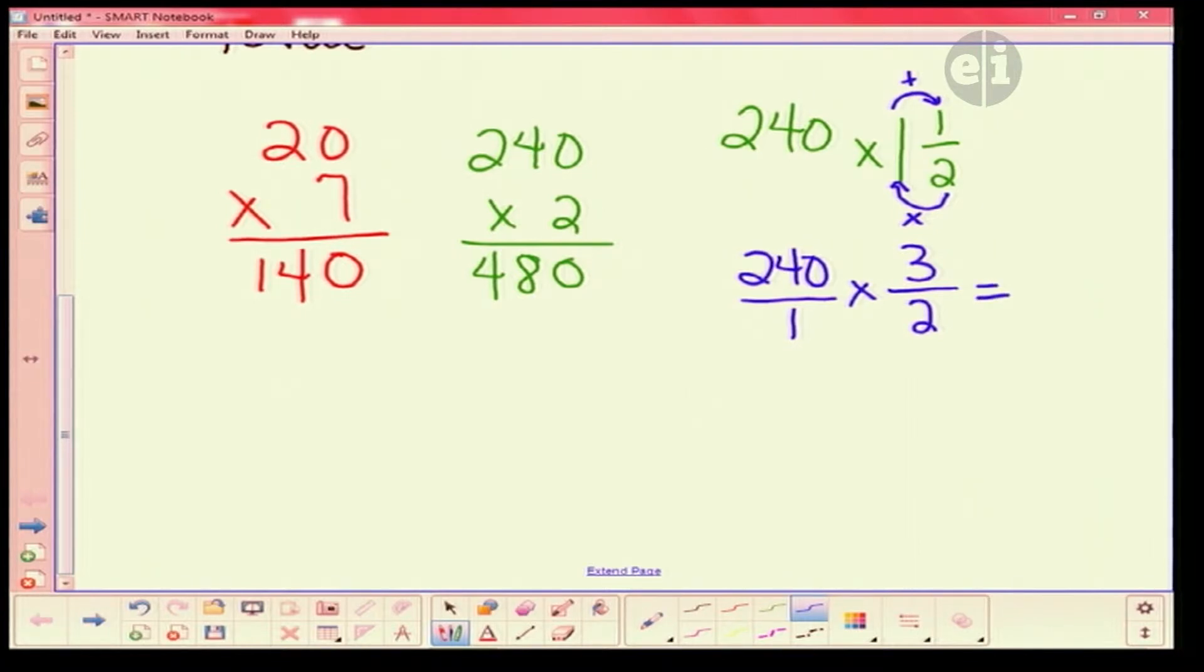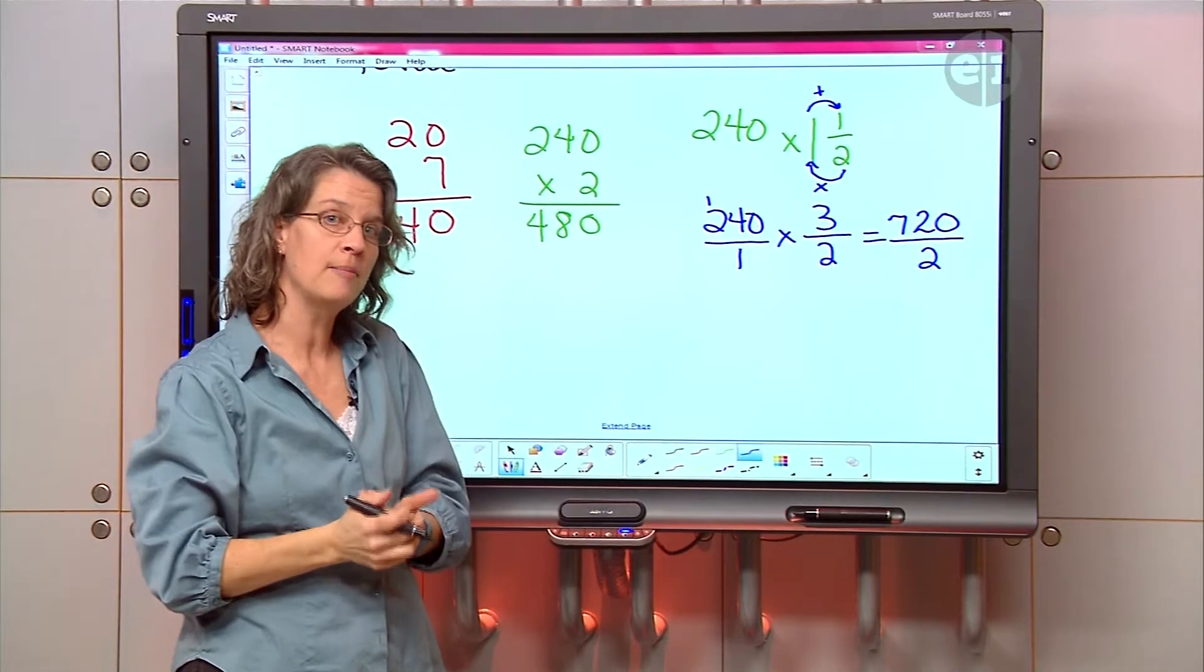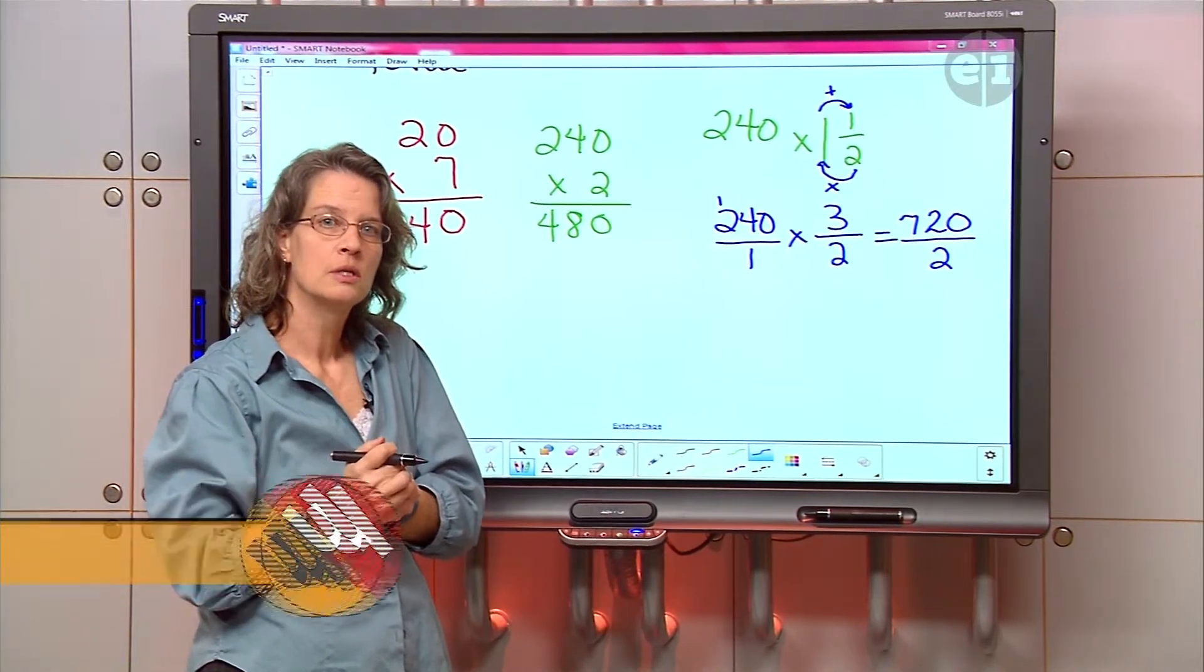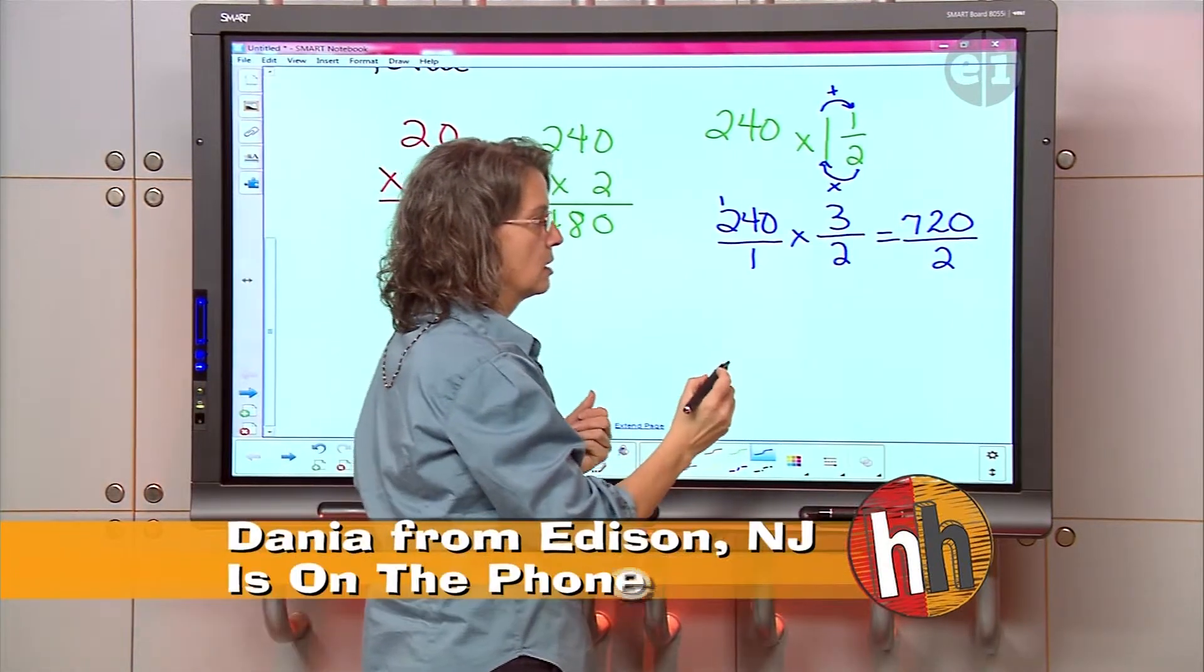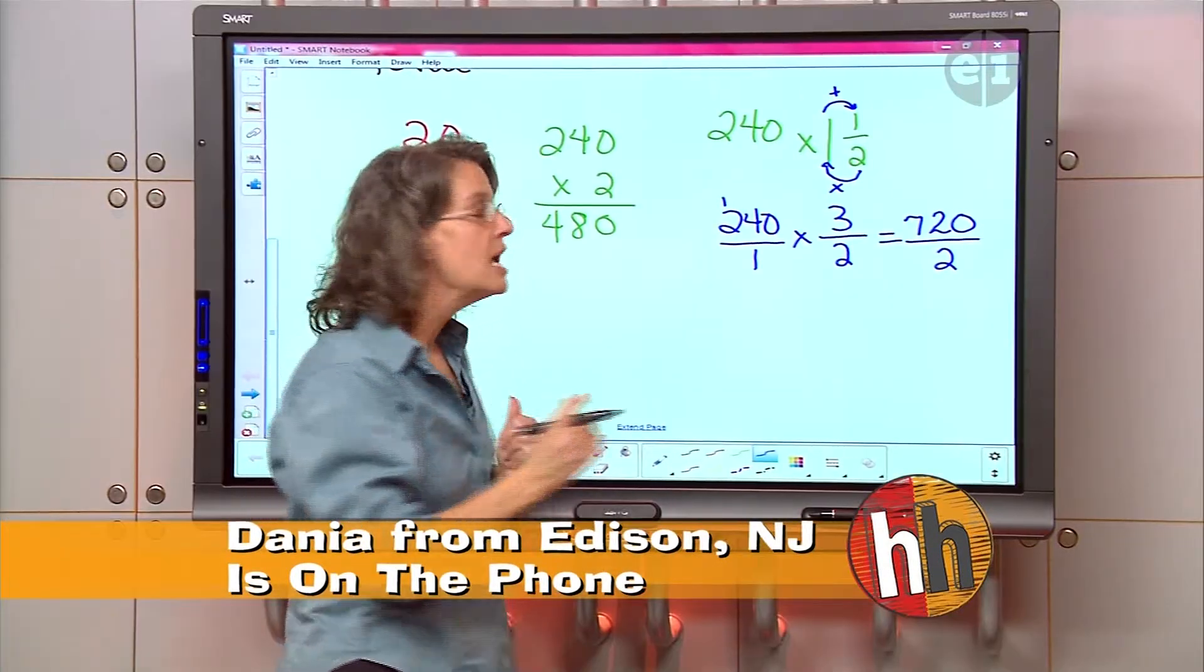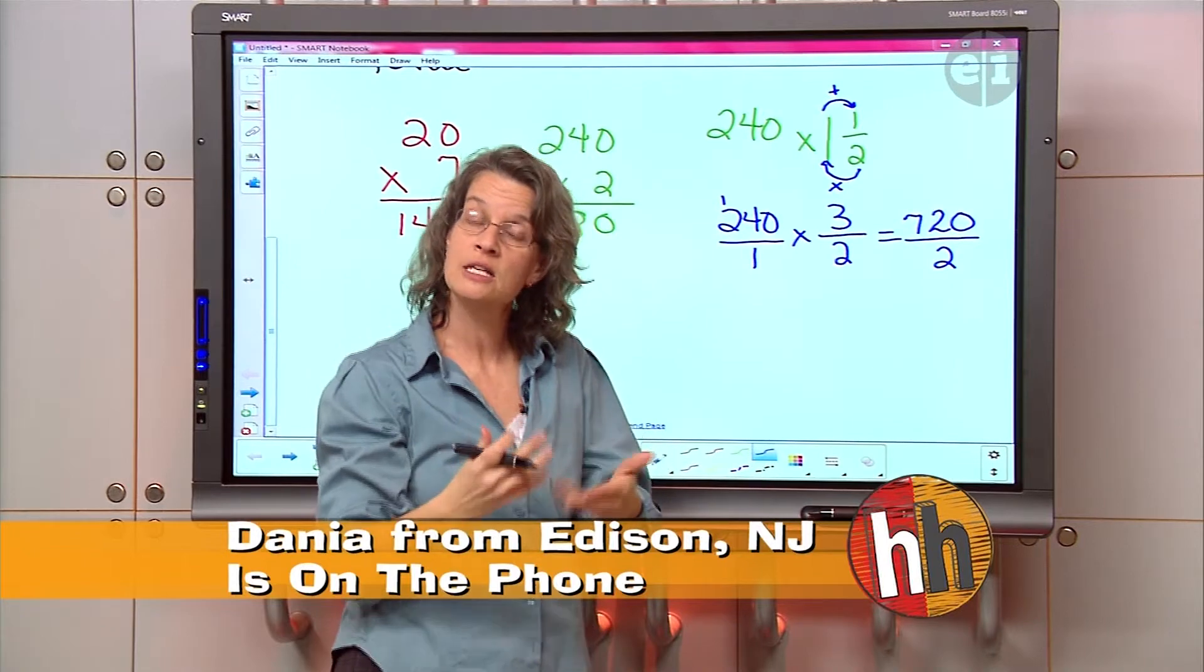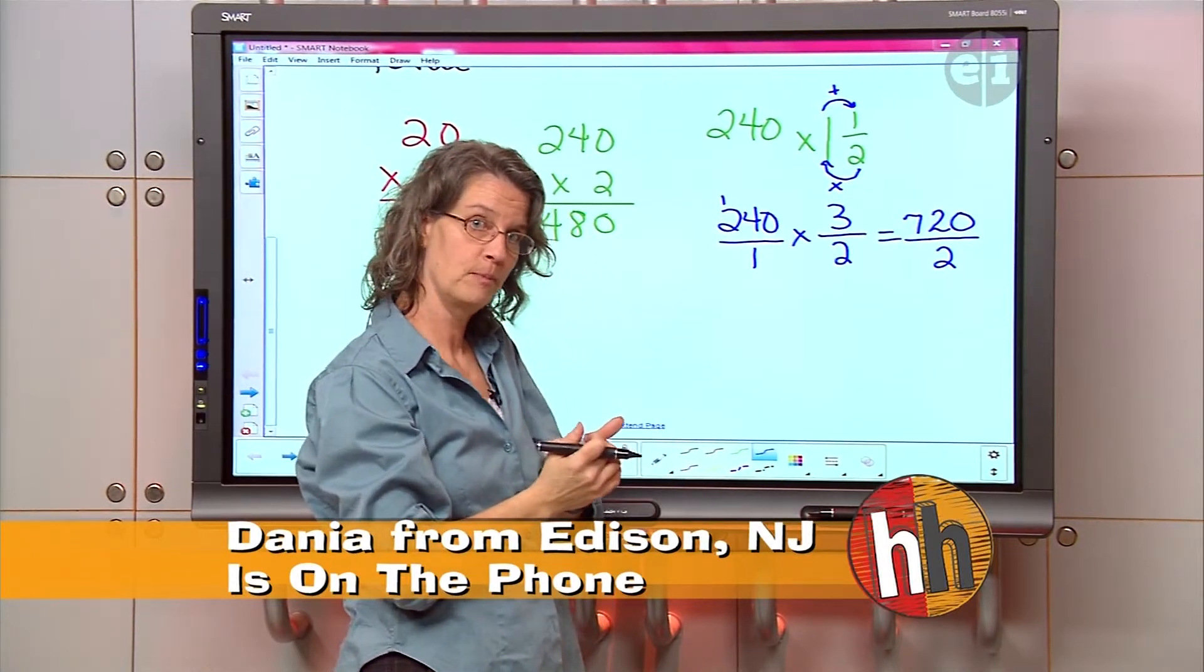I'm just going to write that so it looks like a fraction, so it makes it easier. Three times zero? Zero. Three times four? Twelve. I'm going to put the two, carry the one. Three times two? Six. Plus one? Seven. And now let's multiply our denominators. One times two? Two. Now I've got 720 all over the denominator of two, right? So what does that mean? What should I do?